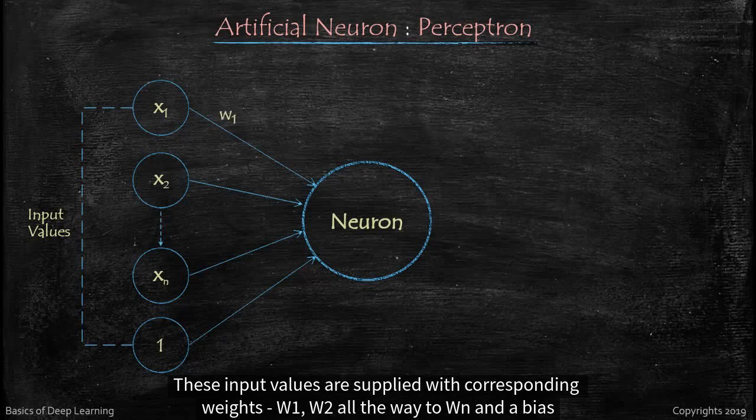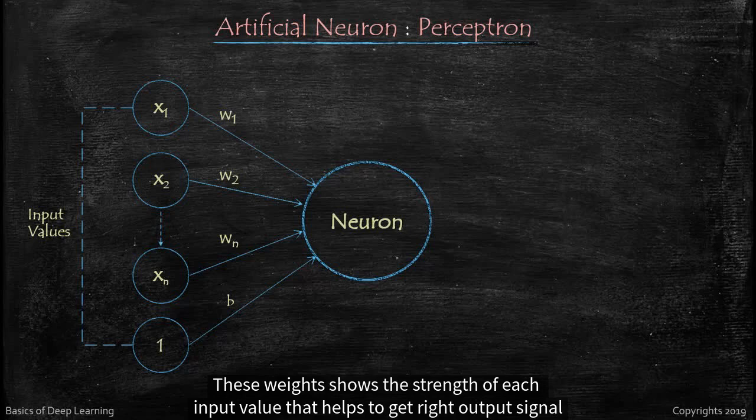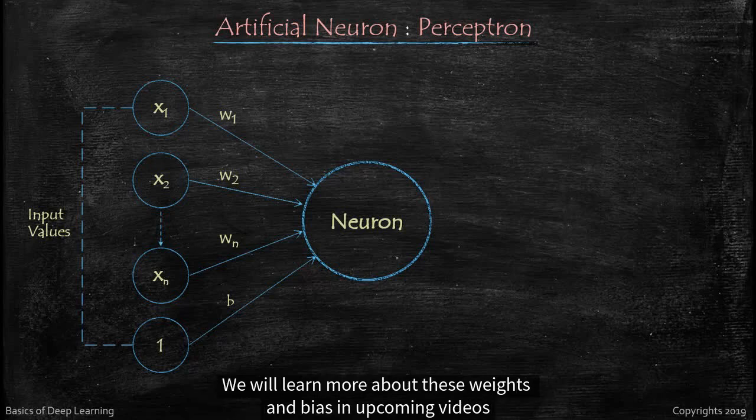These input values are supplied with corresponding weights W1, W2 all the way to Wn and a bias. These weights show the strength of each input value that helps to get right output signal. We will learn more about these weights and bias in upcoming videos.